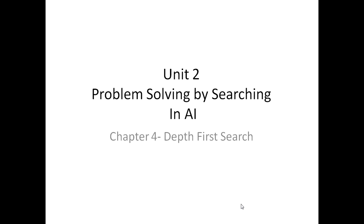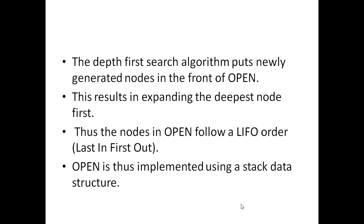The depth first search algorithm puts newly generated nodes in the front of OPEN. We say this because in breadth first search, we put newly generated nodes at the end of OPEN. OPEN is basically a list in which we keep continuing the generated nodes.